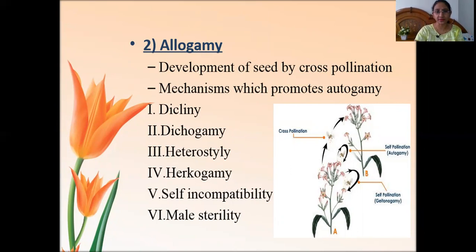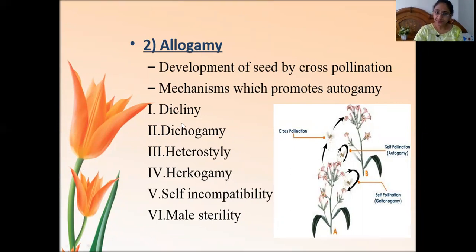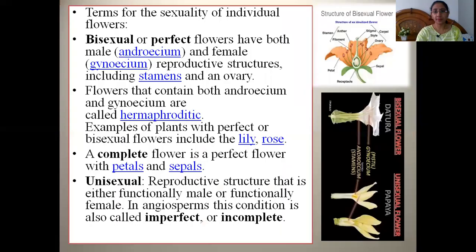Similarly, just as there are mechanisms promoting self-pollination like bisexuality, homogamy, and chasmogamy, there are certain mechanisms which promote cross-pollination. These are: dicliny, dichogamy, heterostyly, herkogamy, and self-incompatibility. These are the mechanisms that promote allogamy or cross-pollination in flowering plants.